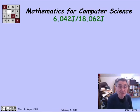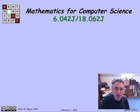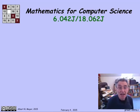This is Mathematics for Computer Science, 6042J, 18062J, a joint subject between electrical engineering and computer science and mathematics.